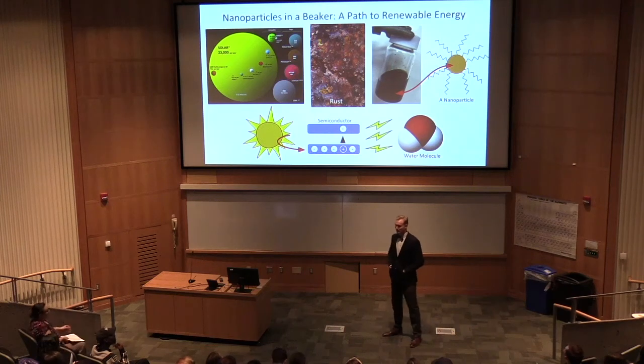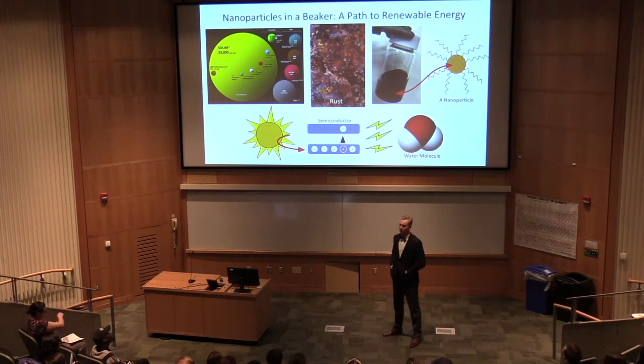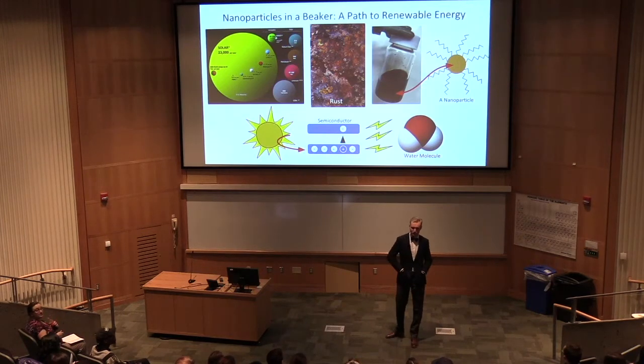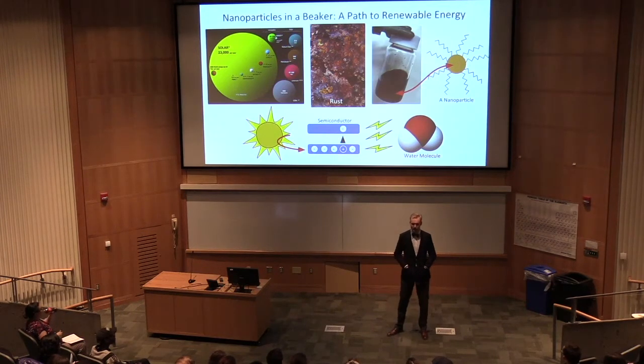Enough solar energy hits the earth every two hours to power all of humanity for a year. So why aren't we totally renewable? You see solar panels on roofs, so what's the problem?